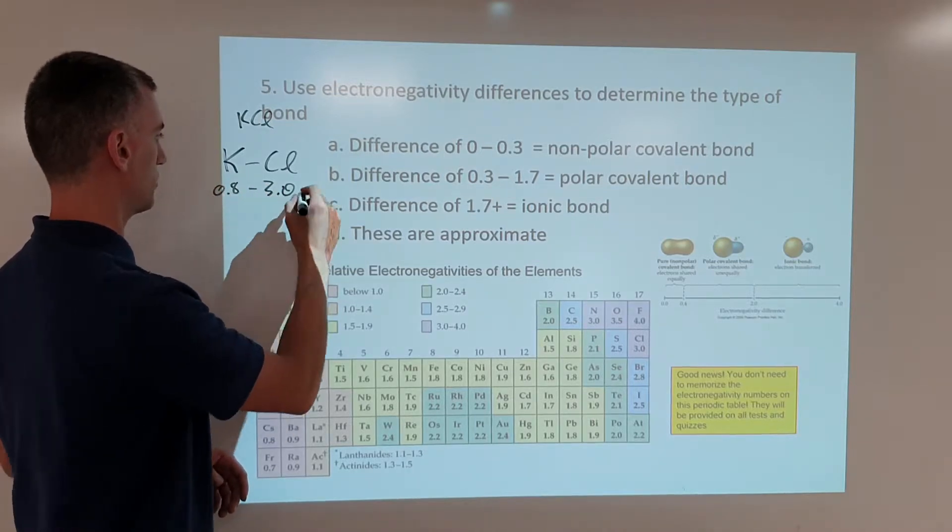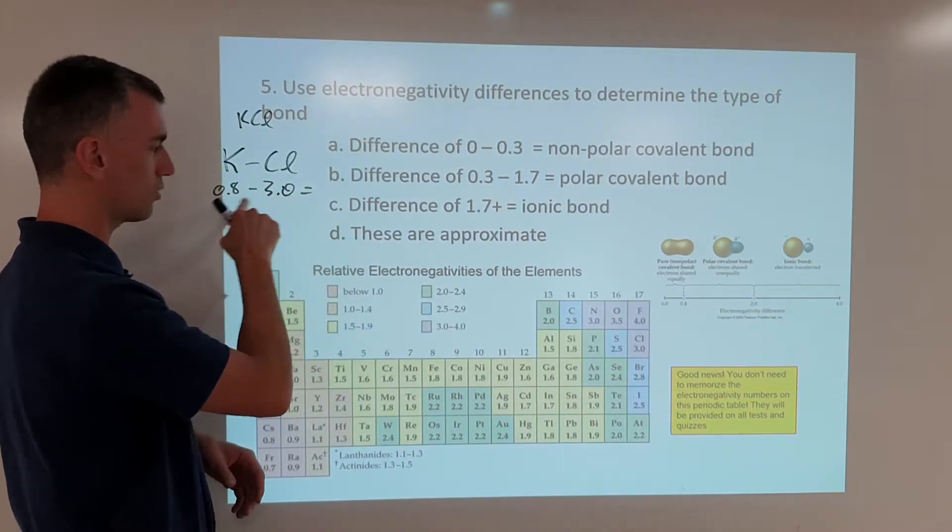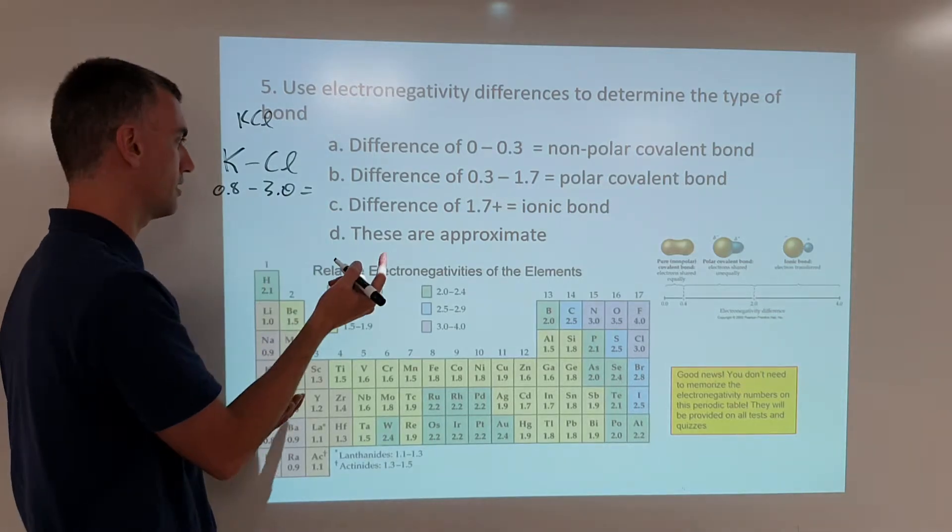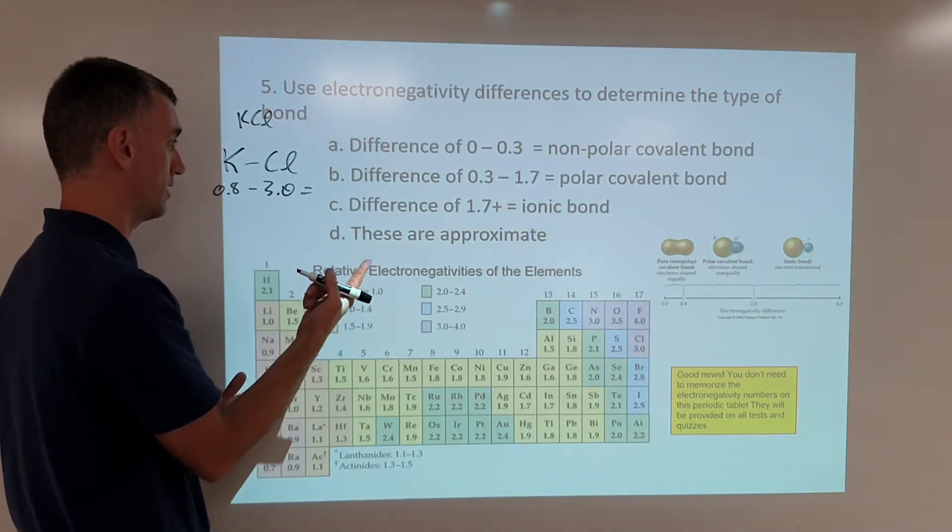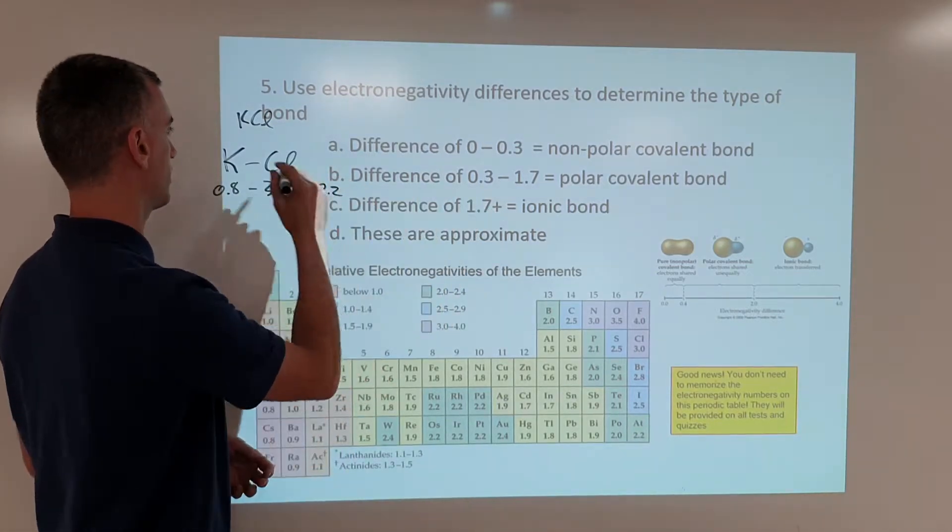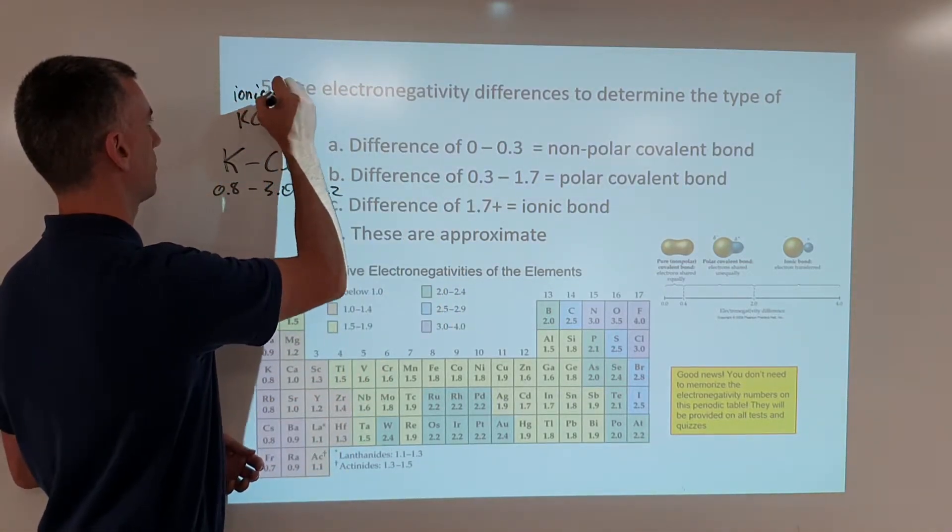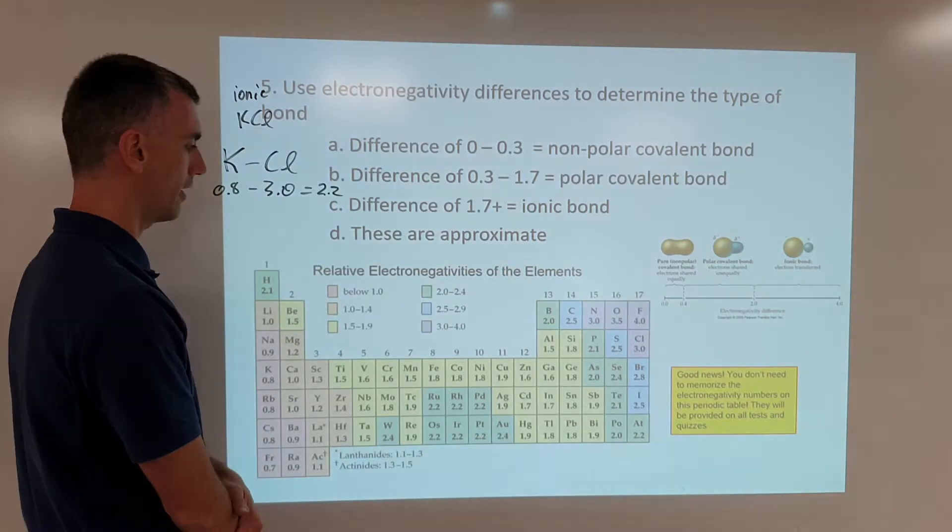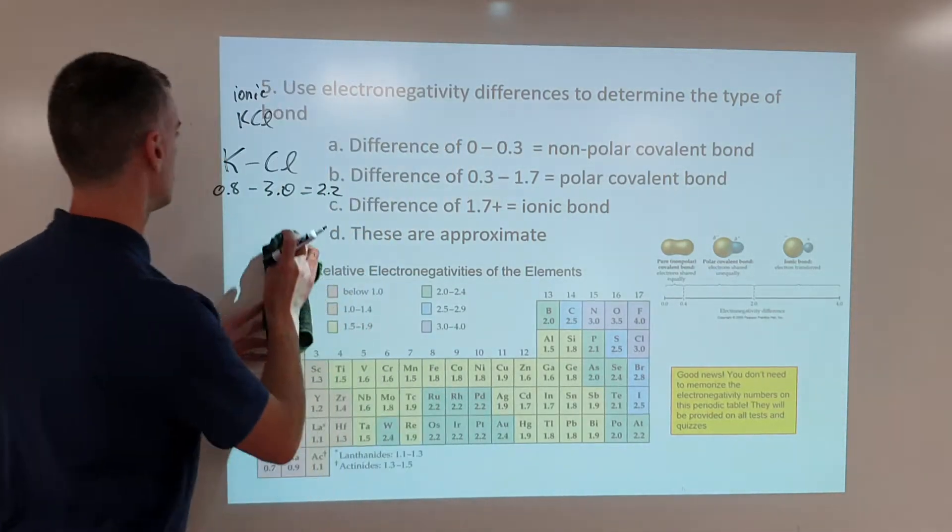So 3.0 minus 0.8, it doesn't matter the order. You get the same number just with or without a negative sign. It's a difference of 2.2, which is for sure ionic. So this is an ionic bond, for sure.